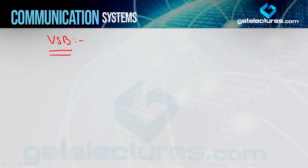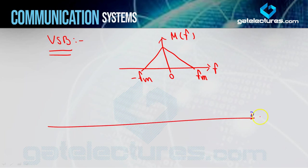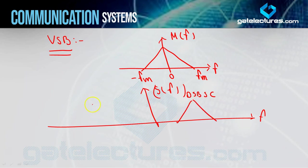Woh method aapka kya tha? Main diagram-wise consider kar raha hoon us method ko. Sabse pehle aap logon ne MT ka Fourier transform consider kiya tha - MF, aur MF ko aapne kuch is tarah se represent kiya tha: minus FM to plus FM. Uske baad aap logon ne DSBSC signal generate kiya tha. DSBSC signal ka Fourier transform kuch is tarike ka tha - S of F of DSBSC. Aap logon ne yahan par is tarah se diagram draw kiya tha: FC, FC plus FM, FC minus FM, same aapka negative side tha.